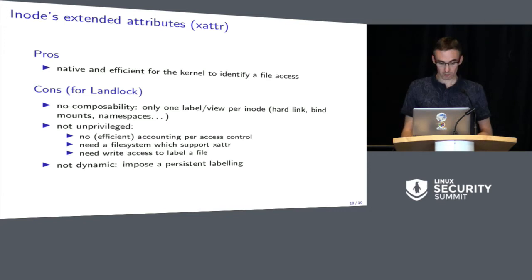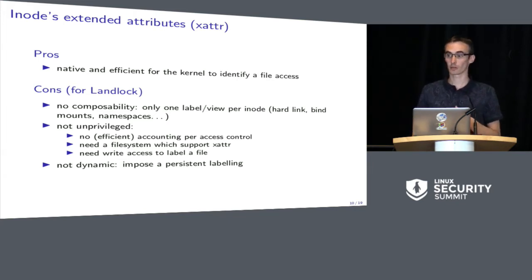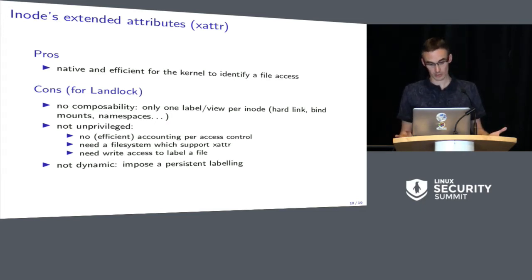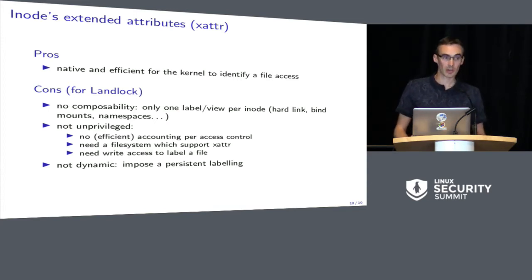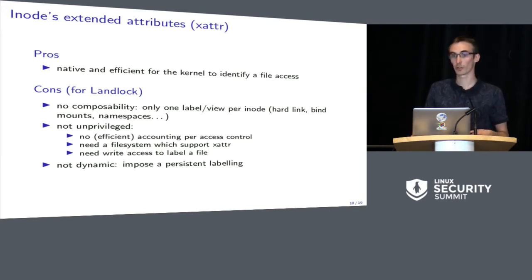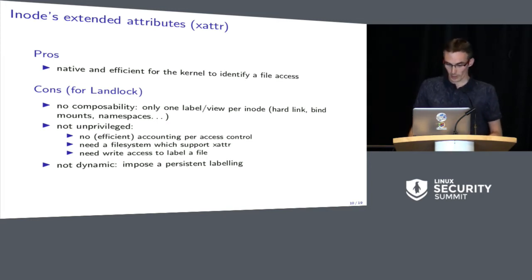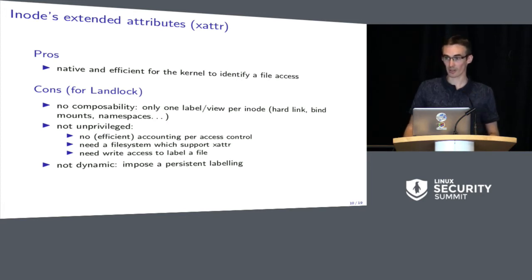For example, if you use bind mounts and namespaces in containers, a file which may have different paths will only have one inode and therefore only one label. For the infrastructure side, we need to be able to account which process created a sandbox security policy. Also, if you want to use extended attributes the file system needs to support this, which is not the case for every file system. And if you want to label a file you need write access to that file system, which should not be allowed for unprivileged users. For the dynamic part, you may not want persistent labeling on the file system but rather label on the fly.